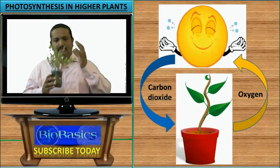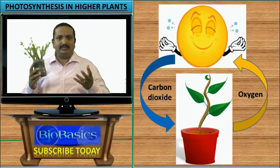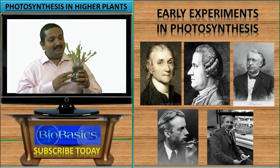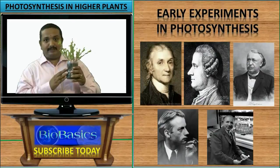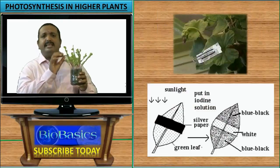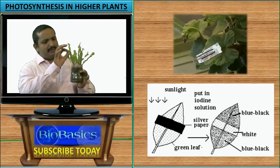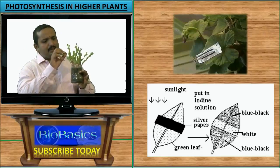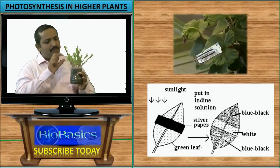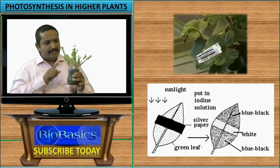Our understanding of photosynthesis did not come bursting out in one single day. It is the result of several experiments done by brilliant scientists. You are already familiar with a few experiments — some involve the variegated leaf experiment, where you cover part of a leaf with black paper, keep it in the sun, then test it for starch. You find starch in the uncovered areas but not in the covered parts. This tells us that light plays an important role in photosynthesis.